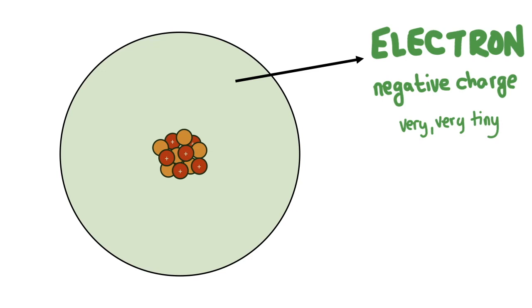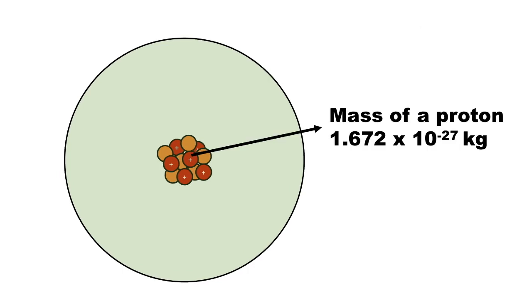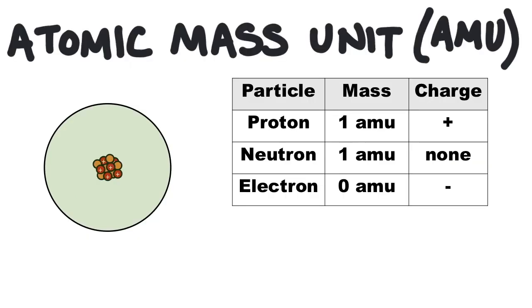Either way, subatomic particles have very, very small mass, so small that it's kind of inconvenient to use normal mass units like grams or kilograms. Instead, chemists derived a new unit called the atomic mass unit, AMU, and it makes understanding the mass of atoms much easier.